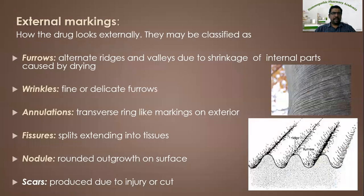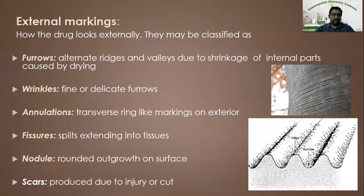Now let us see external markings. External markings — how the drug looks externally — are one of the very important features of identification. It may be classified as furrows in the stem or root — that is alternate ridges and valleys due to shrinkage of internal parts caused by drying. Sometimes there may be presence of wrinkles. Fine or delicate furrows are known as wrinkles; sometimes they are very hard and deep, sometimes delicate and fine.